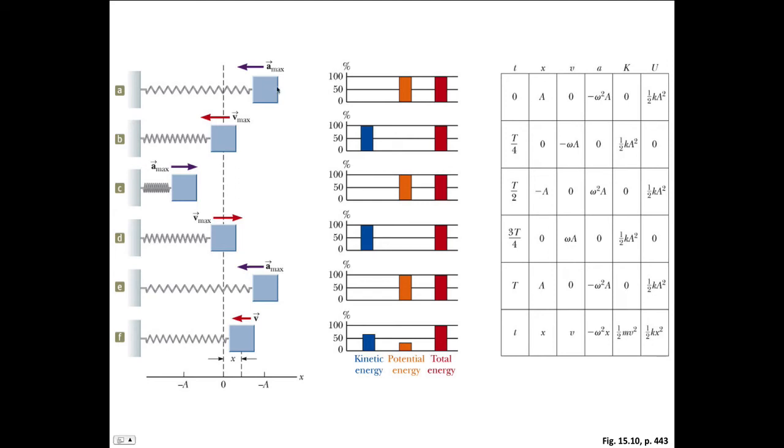So this is just another way of showing you that information. When it's at its maximum displacement, all the energy is stored as potential energy. When it's at its equilibrium position, it has its maximum velocity, but it hasn't stored any energy in the spring, and so it's got maximum kinetic energy and so on.